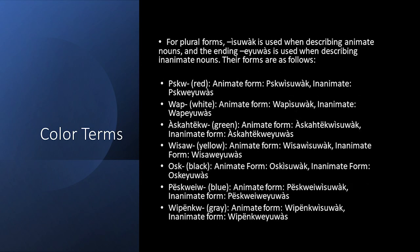For plural forms, -isulwakk is used when describing animate nouns, and the ending -eiuwas is used when describing inanimate nouns. Their forms are as follows.